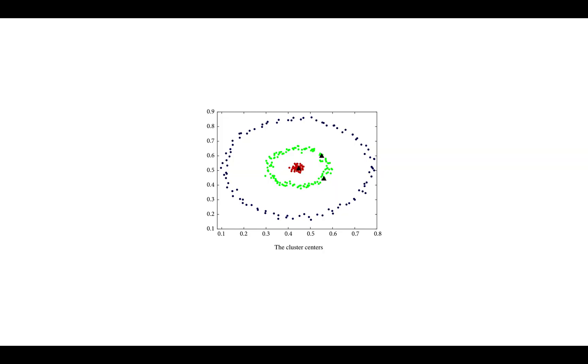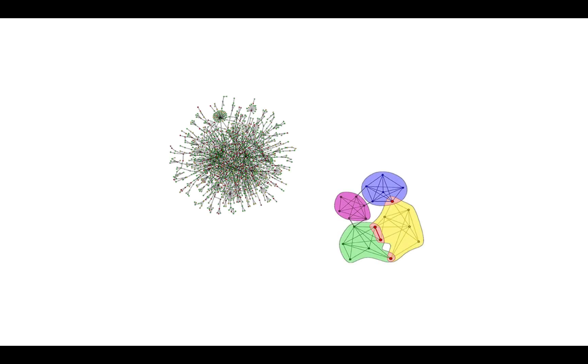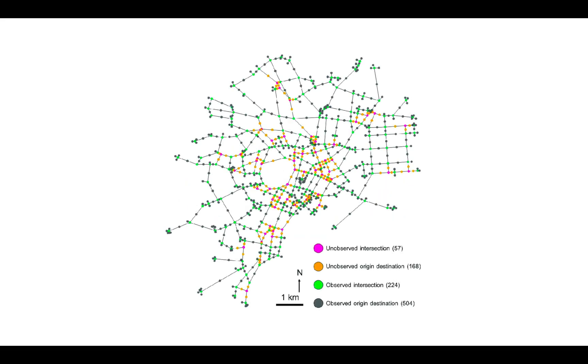MSTs are used in cluster analysis where the long edges can be deleted to get closely connected components. They are used to reduce data storage in sequencing amino acids in a protein. They are used in network designs, whether it's a communication network or electric network or computer network or a road network or any other kind of network.